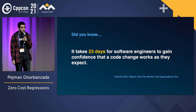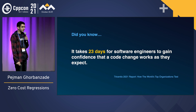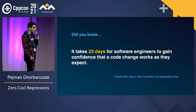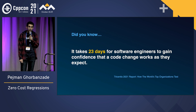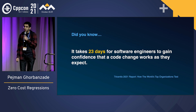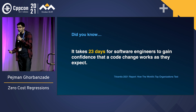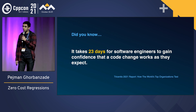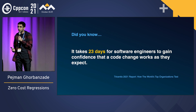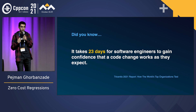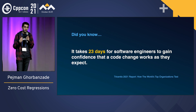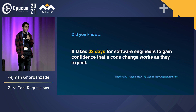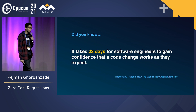It turns out that this is a huge problem in the software industry. On average, it takes 23 days for a software engineer to gain confidence that what they're introducing to their codebase is actually working as they intended.